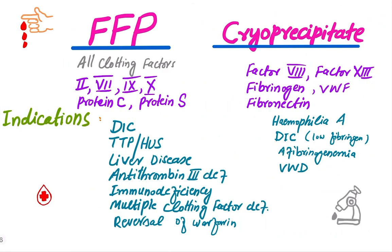Fresh frozen plasma contains all clotting factors, including factors 2, 7, 9, and 10, as well as protein C and protein S. Cryoprecipitate, however, only contains factor 8, factor 13, fibrinogen, von Willebrand factor, and fibronectin.